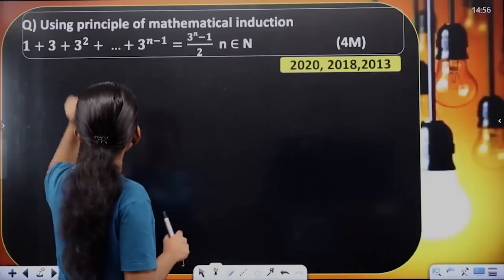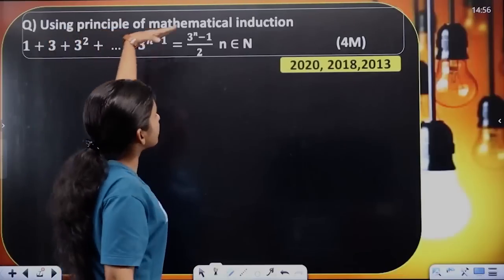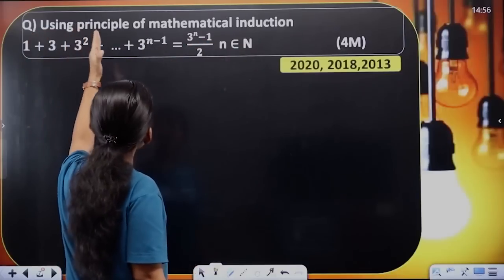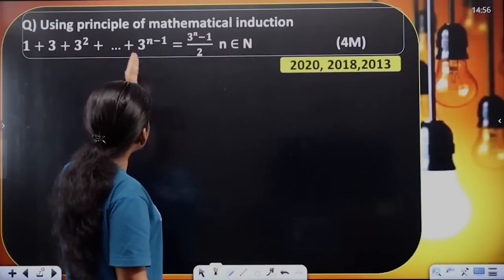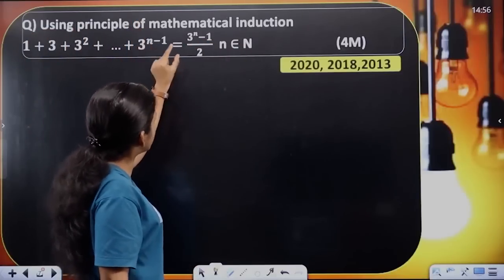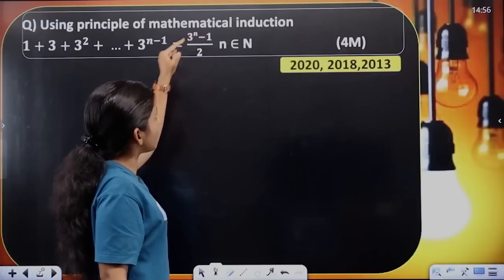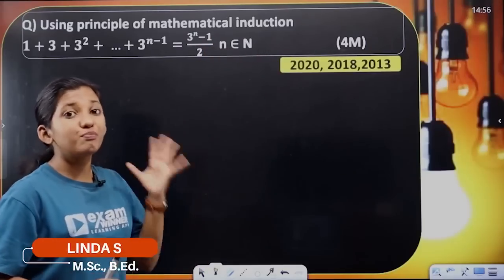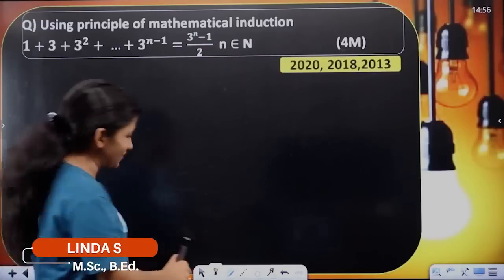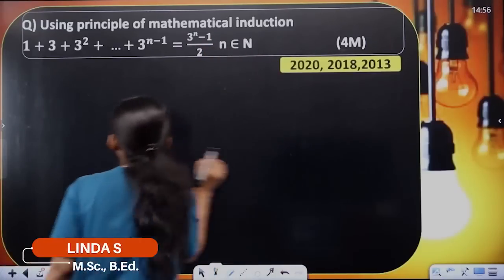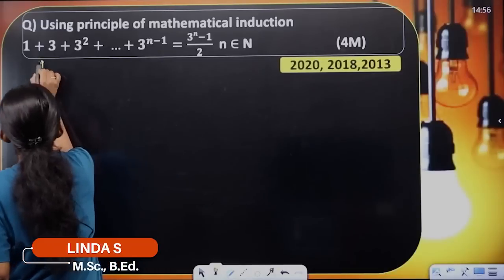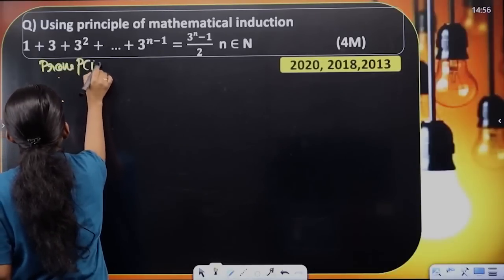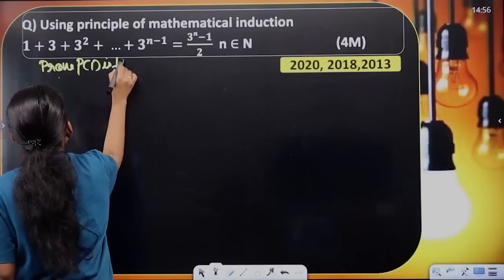First step: using the Principle of Mathematical Induction, prove that 1 plus 3 plus 3 squared plus etc. up to 3 raised to n minus 1 equals 3 raised to n minus 1 divided by 2, for n belonging to N. In the first step, prove P of 1 is true.